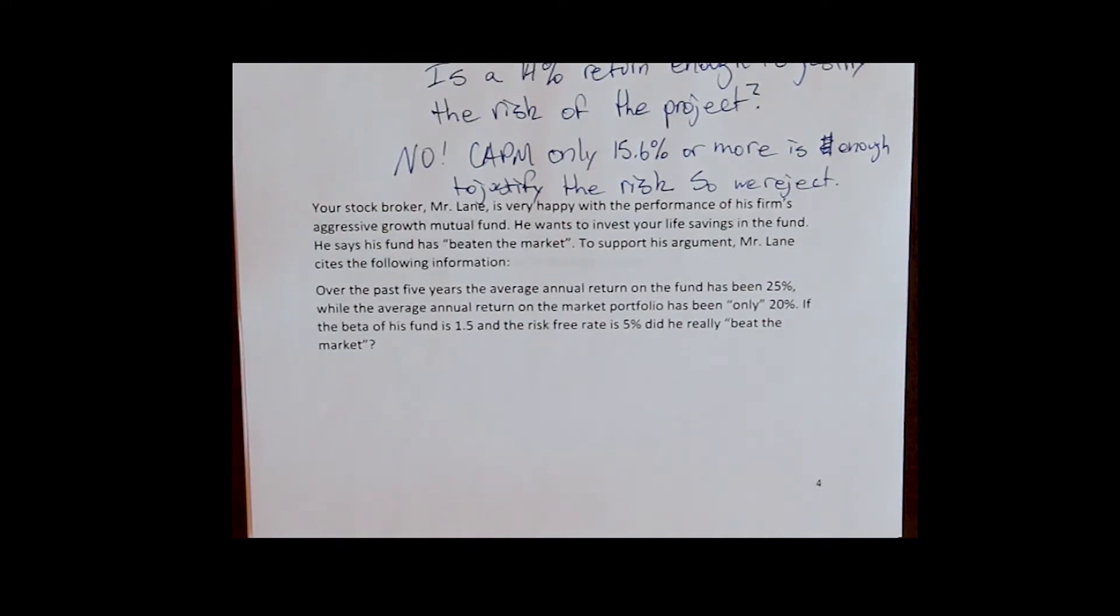Now, this is a really common thing that you're going to see. People claiming to have beaten the market or to have better performance than the market. What we have to remember, though, is that the fundamental rule of finance says it is always possible to earn a greater return than the market. How is it possible? By taking more risk. The only way to beat the market is to earn a greater return and take less risk than the market.